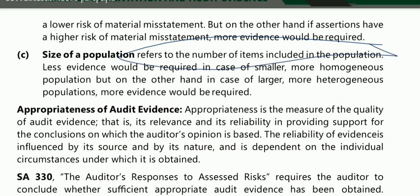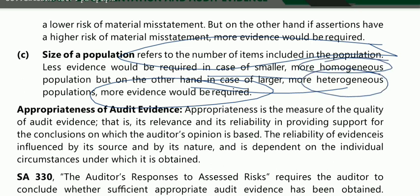Regarding population: less evidence would be required if items are small and homogeneous, but if they are big and heterogeneous, more evidence will be required. Homogeneous means items are of the same nature; heterogeneous means items are of different nature. So if items are in different phases or types, there will be more variety and therefore more evidence needed.